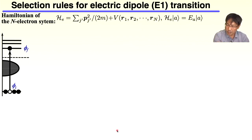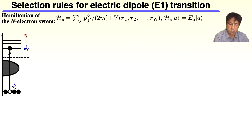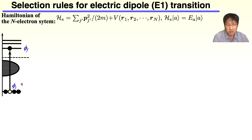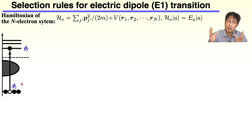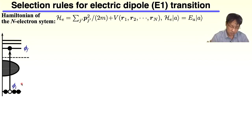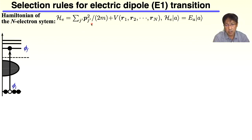Before directly going to the one-photon process, we need to consider one realistic situation. Up to now, we only considered one electron, but in reality there are so many electrons in solids, and only when we restrict to the atom, the number of electrons is Z, equivalent to the atomic number. That means the number of electrons is multiple. Then, the electron Hamiltonian is exactly like this one.